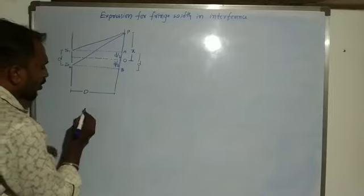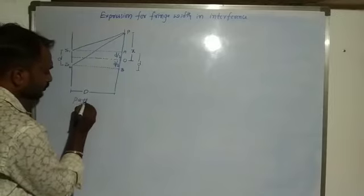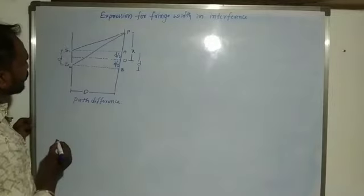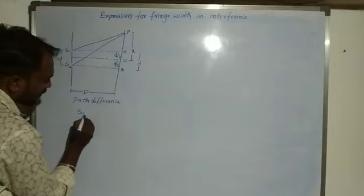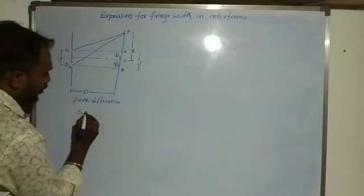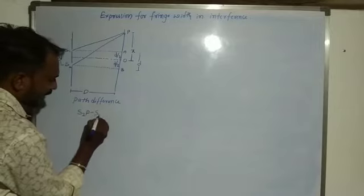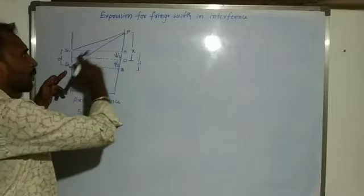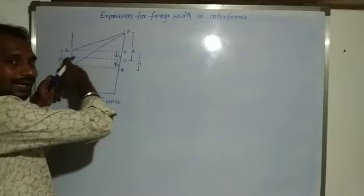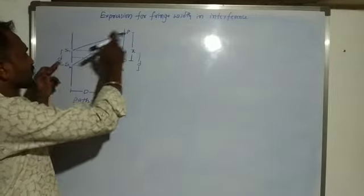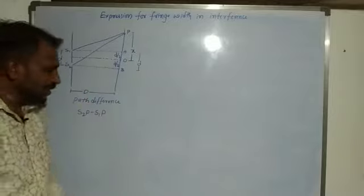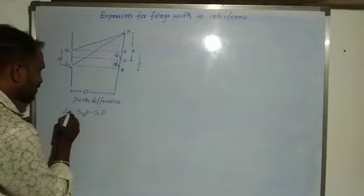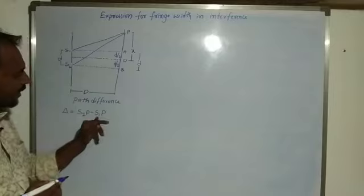Two waves meet at point P on the screen. The path difference delta is defined as S2P minus S1P, because S2P is the longer distance and S1P is the shorter one.